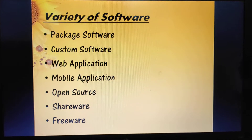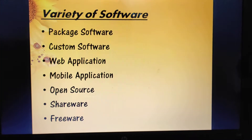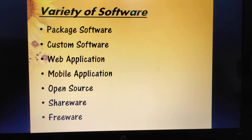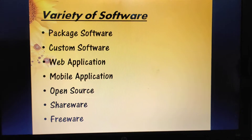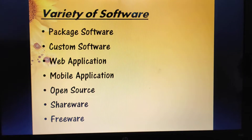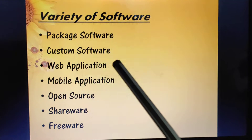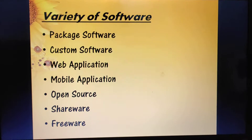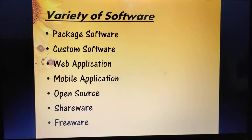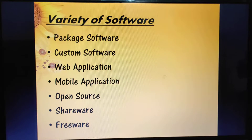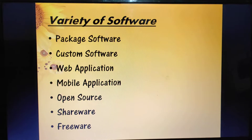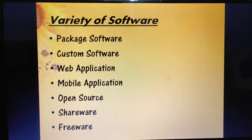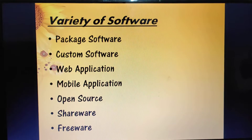Software is available in a variety of forms. The first one is packaged software — it is a copyright software that is available in computer retail stores or on the internet. Next is custom software — if you want a particular software as per your need or requirement, you may ask a programmer to develop and design custom software for you.